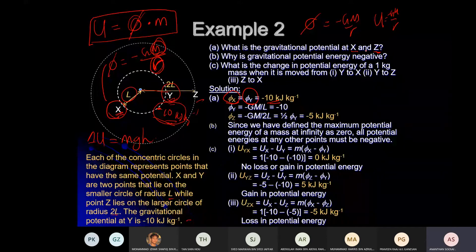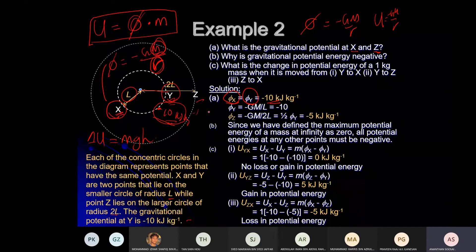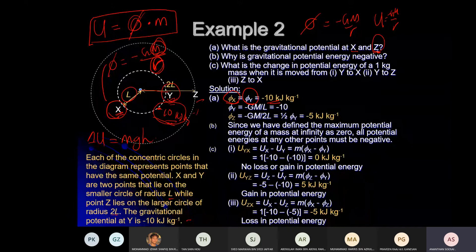So gravitational potential at X equals gravitational potential at Y — both are the same because they have the same distance from the planet. The work done to bring a unit mass from infinity to X and from infinity to Y is the same.